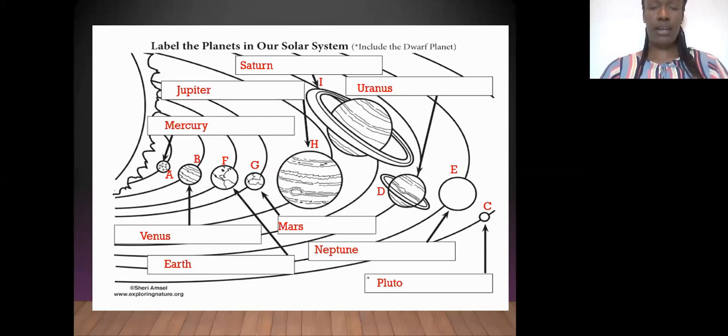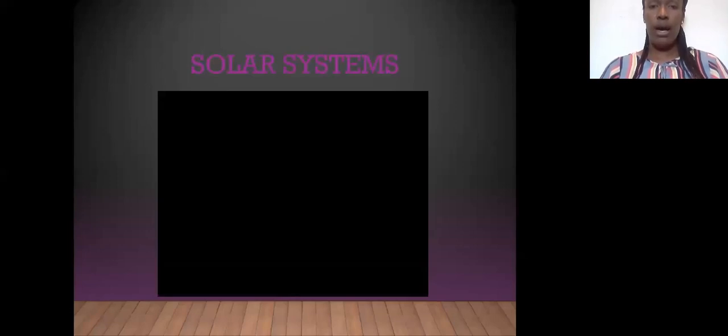Now we're going to take a look at the planets a little more in depth. You're going to watch a video at this time on the solar system. During the video, I need you to write down one description that you can remember about each planet based on what the video says.